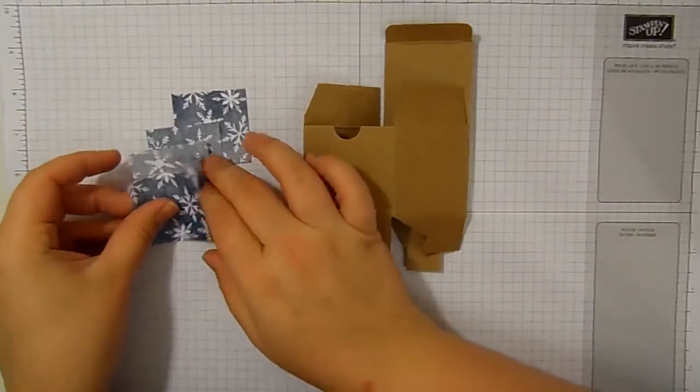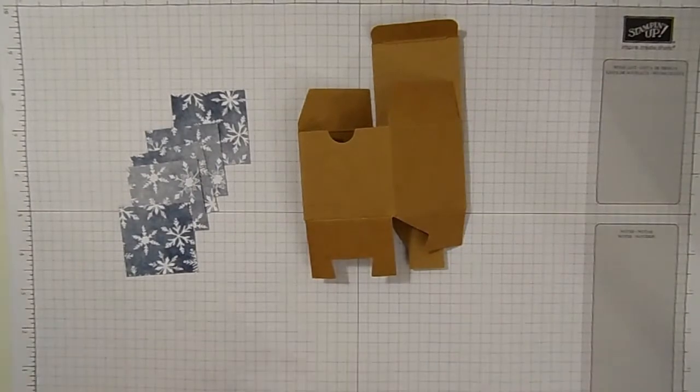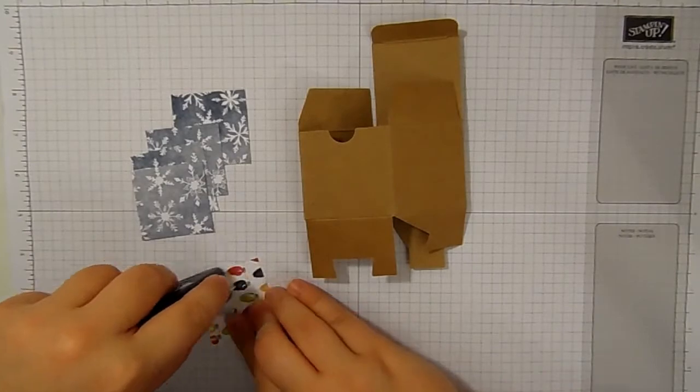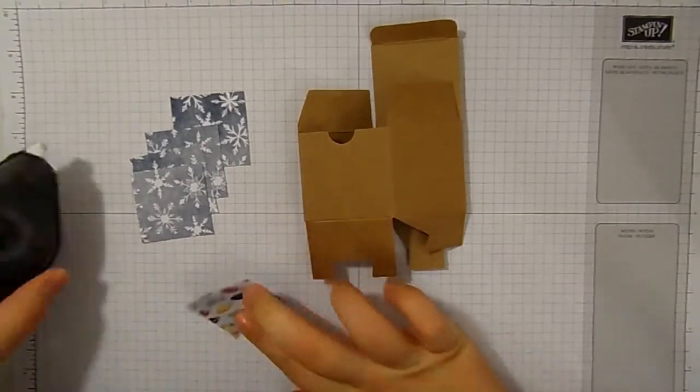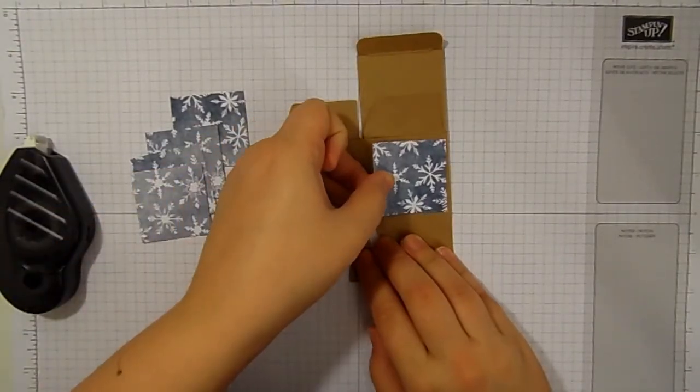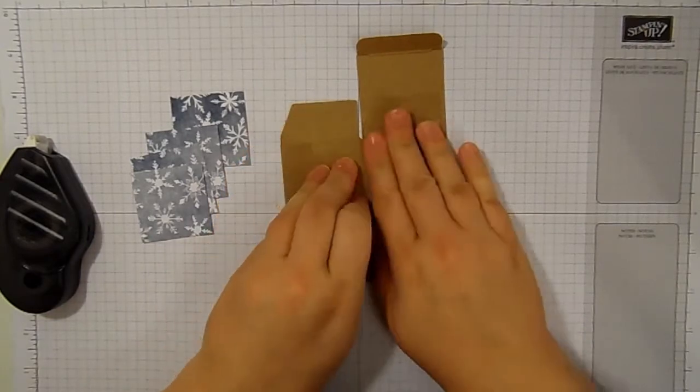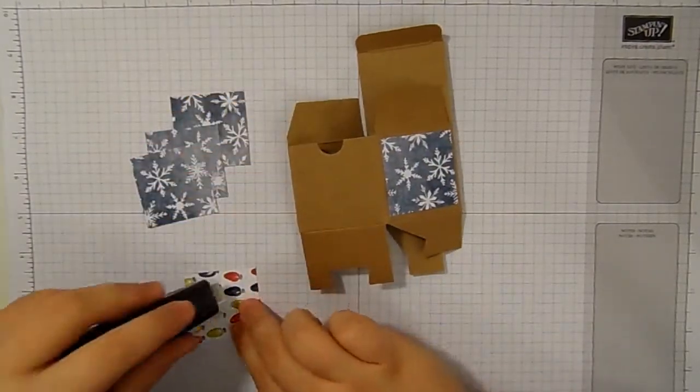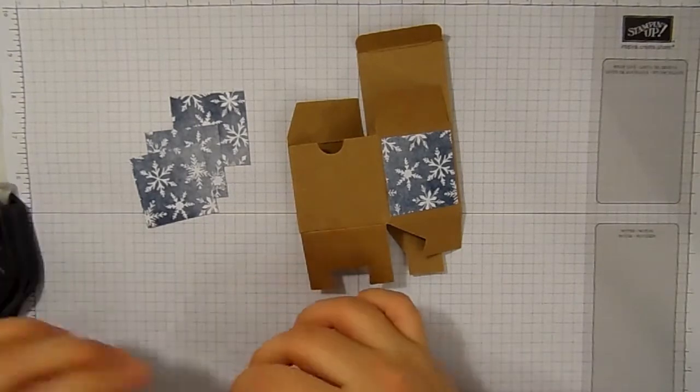And I say four, you need five pieces. Brain's not working this morning. And I'm going to use my Fast Fuse to stick these on. For all of the 25 boxes, I've used five sheets of Designer Series paper.